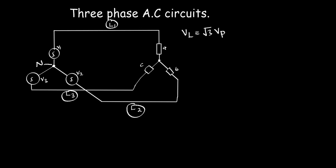When the loads are the same, the voltage drop across all of them — which is the phase voltage — will be the same. But when the loads are not the same, the voltage drops across them will not be the same. That's what the balanced load means. If you want to find the phase voltage, the phase voltage equals the line voltage divided by the square root of 3.